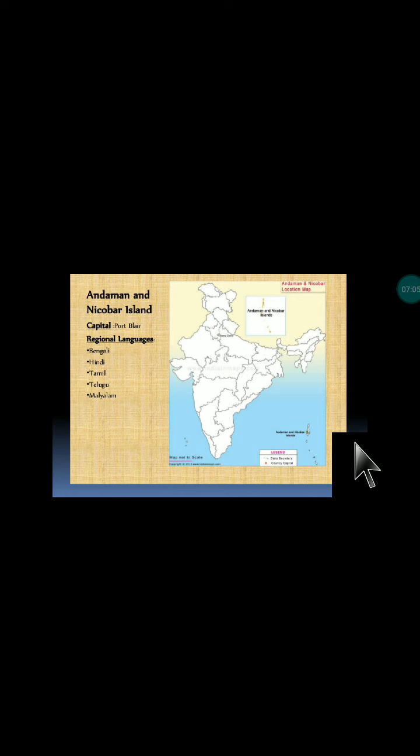Here are the locations of the union territories. First, Andaman and Nicobar Islands, located at the southern tip of India, with capital Port Blair. Languages spoken include Bengali, Hindi, Tamil, Telugu, and Malayalam. Next, Delhi — a capital city of India — where regional languages include Hindi, Punjabi, Urdu, and Bengali. Then Puducherry, with capital Puducherry, where Tamil, Telugu, and Malayalam are spoken.